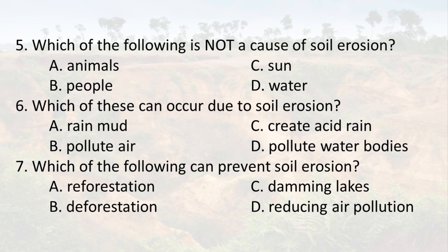7. Which of the following can prevent soil erosion? A. Reforestation. B. Deforestation. C. Damming lakes. D. Reducing air pollution.